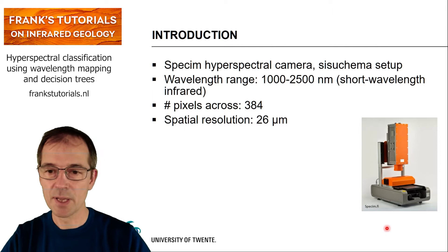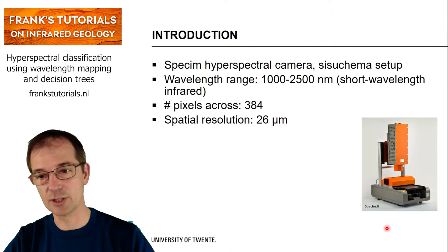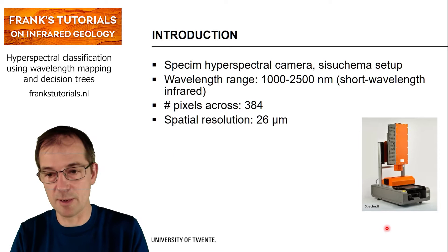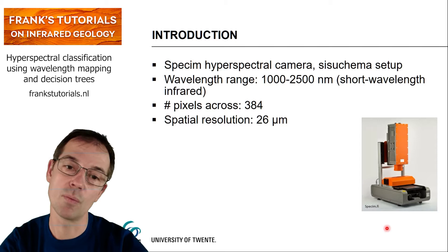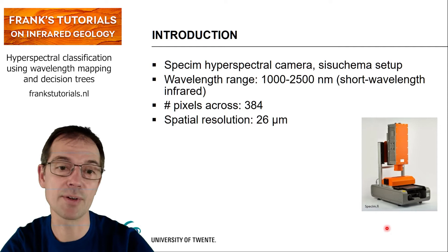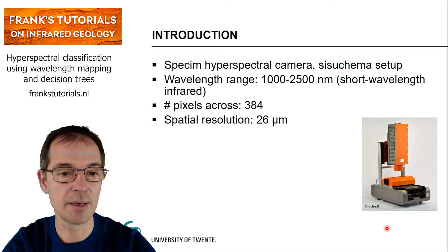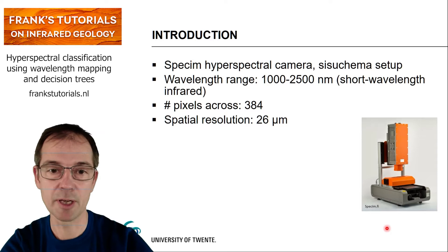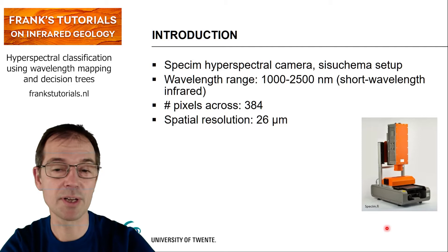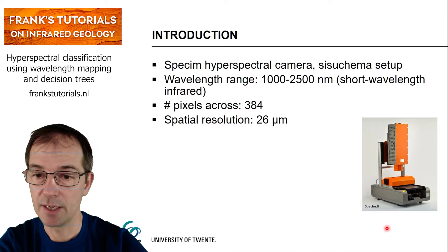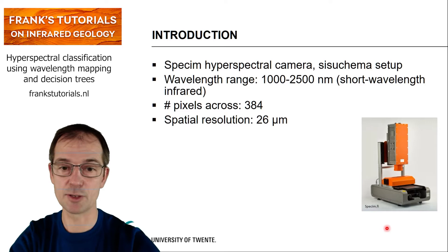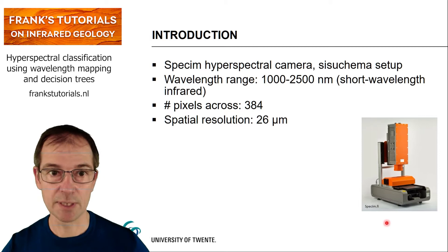What you see here is a SPECIM hyperspectral camera — a SISU-KEMA setup — which is especially made to acquire high spatial resolution images. The wavelength range is from 1000 to 2500 nanometers, which we call the shortwave infrared. The images are of variable length depending on how long you keep the camera running, but the number of pixels across is 384. With this setup, each pixel is 26 by 26 micrometers — so really very detailed.